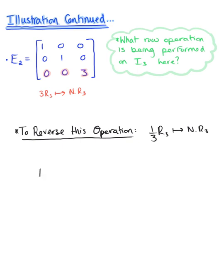We define this as the inverse of the elementary matrix E sub 2. It is the 3 by 3 matrix: 1, 0, 0 in row one; 0, 1, 0 in row two; and 0, 0, one-third in row three. And this is our final answer.